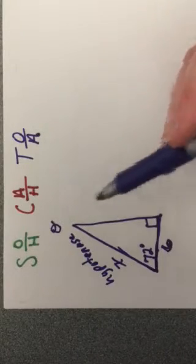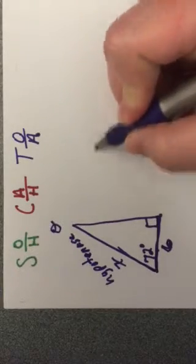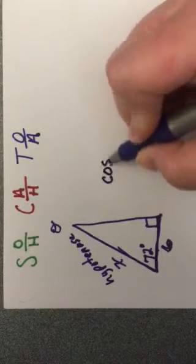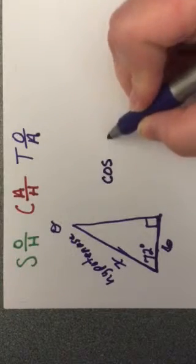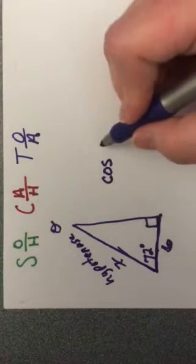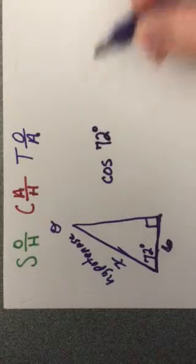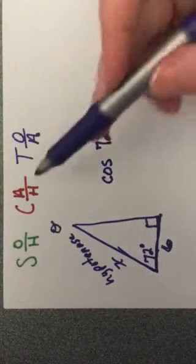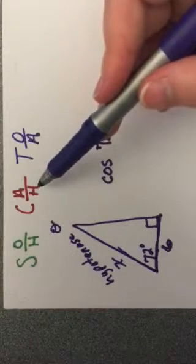So we're going to use cosine. Let's start filling this in. We're going to write an equation now. So we know we're using cosine. Remember, it was cosine of theta. Well, they've given us an angle measure, which is 72. So we're doing the cosine of 72 degrees equals adjacent over hypotenuse.